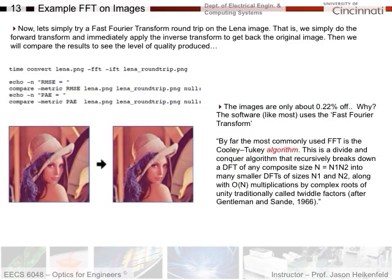Let's do a fast Fourier transform on the Lena image. From that website, they basically did a full round transform where they went from the spatial domain to the frequency domain and back to the spatial domain. When they did that using the fast Fourier transform, they compared the images and found it was only 0.22% off between the original and the reconverted image.